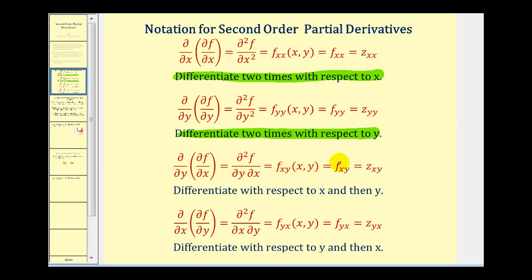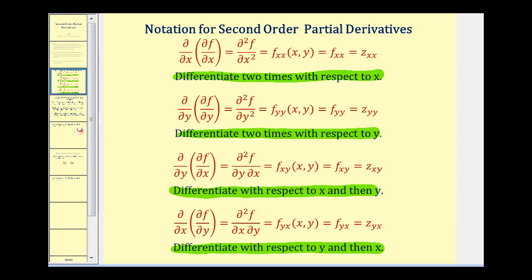Looking at the last three notations, we find the partial with respect to x and then with respect to y — but notice how the order of the notation goes from left to right in one case, and right to left in another. Here the notation has reversed to find the partial derivative with respect to y first, and then with respect to x. We need to be aware of these differences. Sometimes these last two are called the second order mixed partial derivatives.